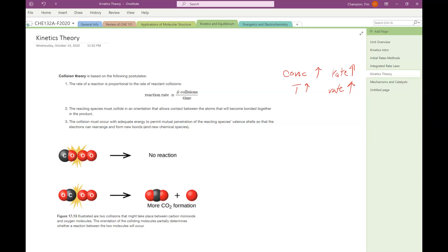The second factor is called the orientation factor. The atoms have to collide in the proper way. We've got figure 1713 for the reaction of two carbon monoxides reacting with oxygen to make two carbon dioxides. How is this going to start?